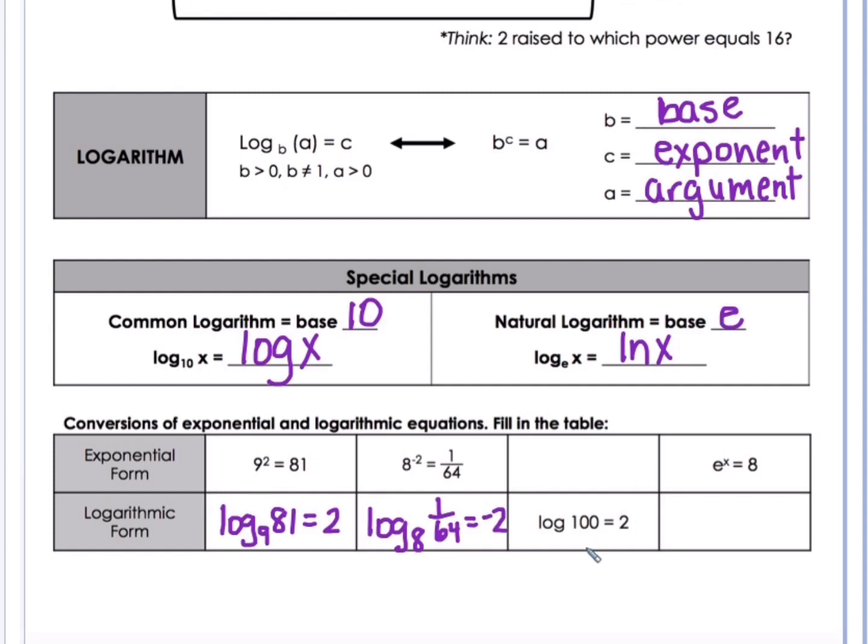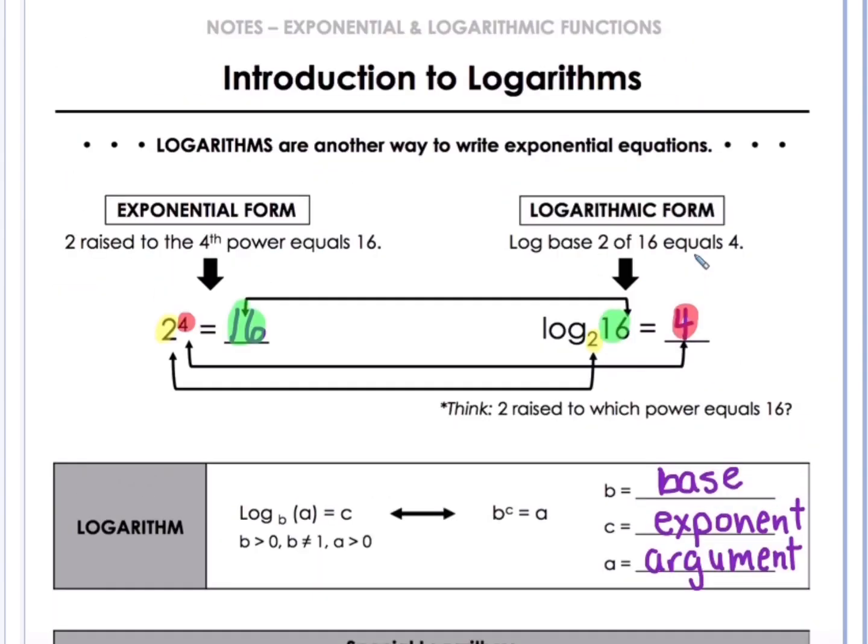Now I'm giving it in log form, and I don't see a base, so I know that it's going to be my common log. So I know it's going to be 10 to the second power equals 100. And we know that that is true, 10 squared is 100. If I have e to the x power equals 8, I can write that as natural log. I don't have to write log base e. I can say natural log of 8 equals x. So there we're just converting from one form to the other.